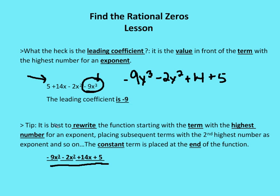I suggest to my students it's best to rewrite the function starting with the term with the highest exponent first, then placing subsequent terms with the second highest, third highest, and so on, with the constant term placed at the end. So I would rewrite this polynomial as negative 9x cubed minus 2x squared plus 14x plus 5. The constant is 5 and negative 9 is the leading coefficient.